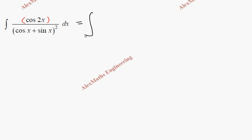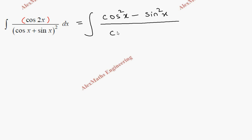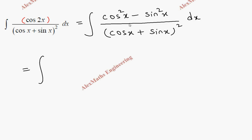So we have the integral of (cos²x − sin²x) divided by (cos x + sin x)² dx. The numerator can be written in the form of (a + b)(a − b).